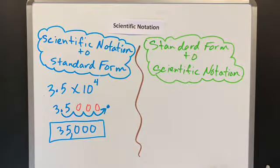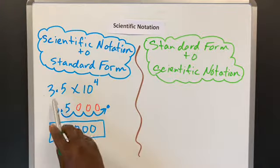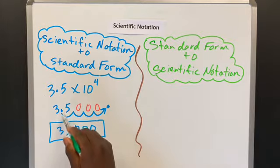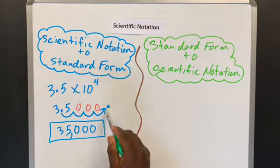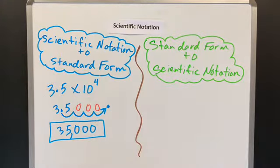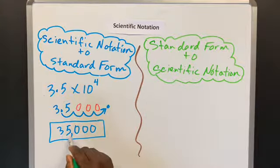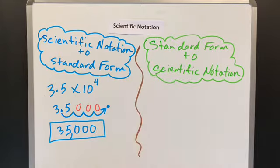How do we know it's right? We know it's right because if the decimal is here, if you were to write 3.5 and move that decimal four spaces to the right, you would have 35,000. So if the decimal were here, it would move four spaces to the right, giving us that standard number.